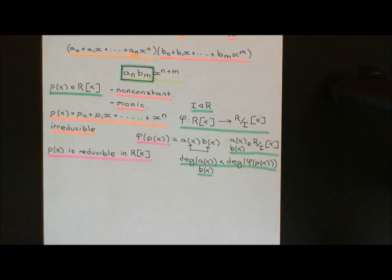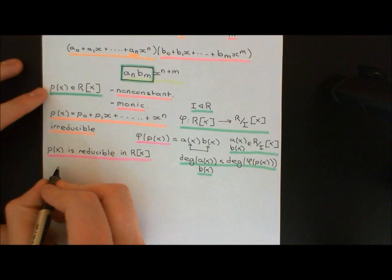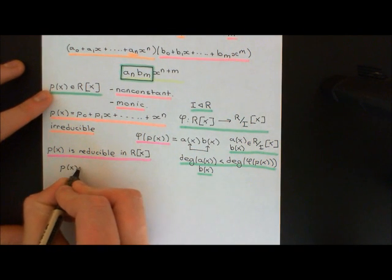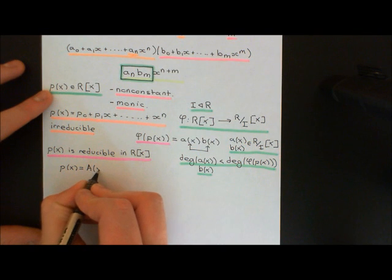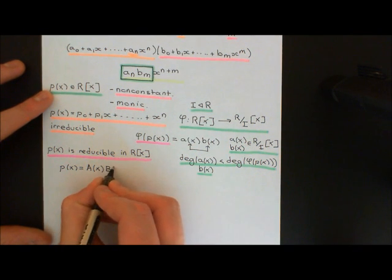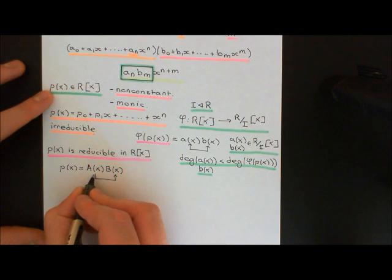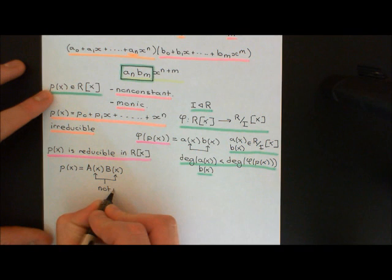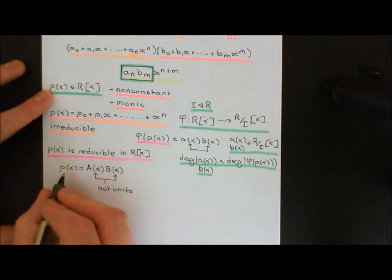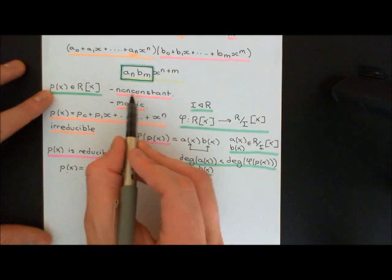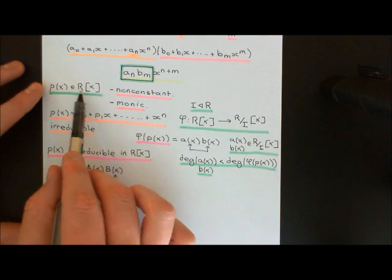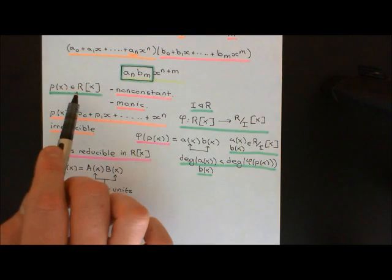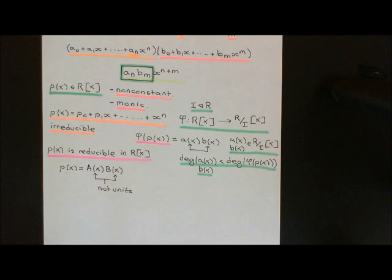Using the fact that it's reducible in this ring of polynomials over the ring capital R, that means that I can write it as the product of two polynomials where those two polynomials are not units. So I'll call them capital A and capital B. Let's have P of x is equal to capital A of x times capital B of x, and these are not units — that's just using the definition of reducible.